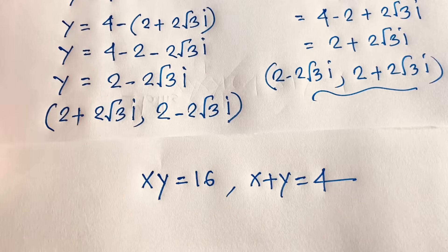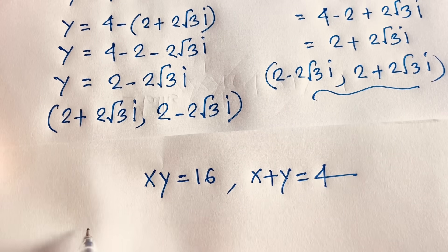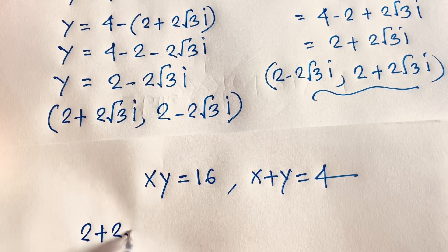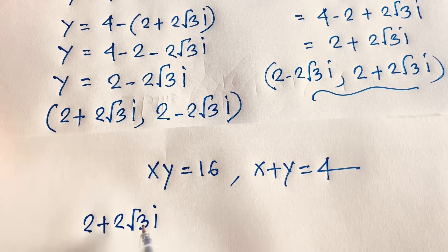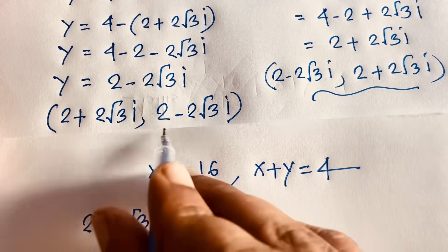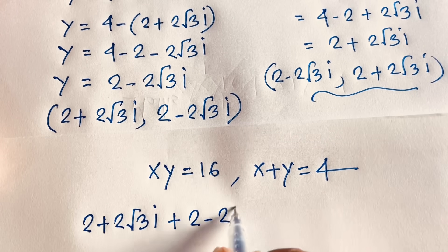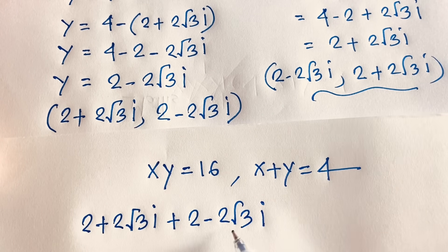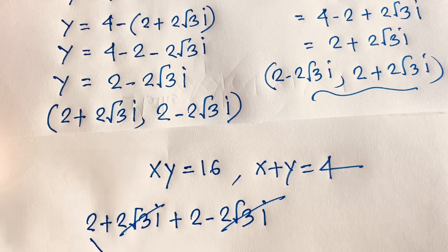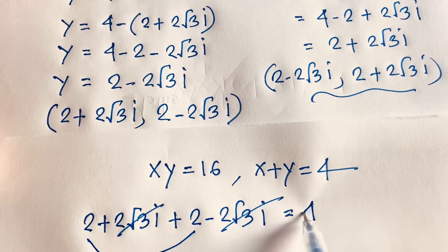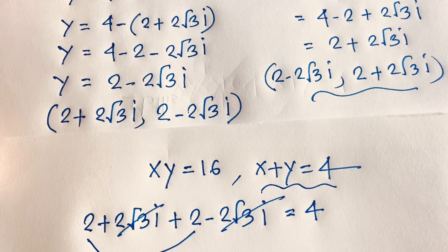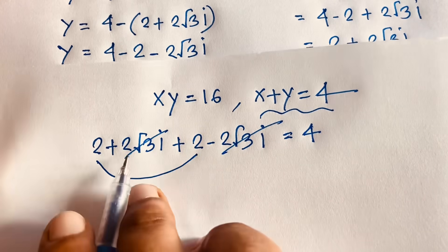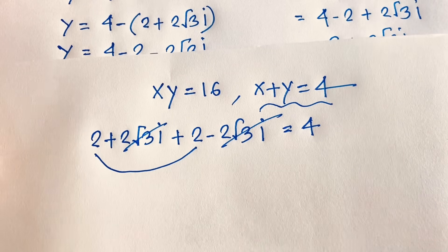Verifying x plus y equals 4: (2 plus 2√3i) plus (2 minus 2√3i). The imaginary parts cancel, and 2 plus 2 equals 4. So x plus y equals 4 is confirmed.